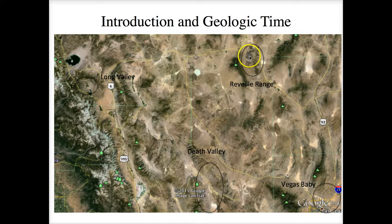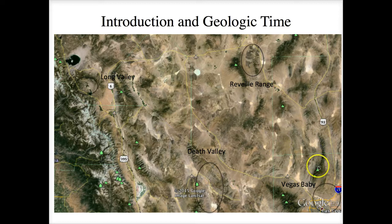Moving west from the Reveille Range, still in the Basin and Range, you can see from this Google Earth photo all of these ranges with basins in between — you can tell how that region got its name. If you're driving along this part of the world, you just keep going up over ranges, down into basins, over ranges, down into basins. We'll discuss how and why this region was formed.